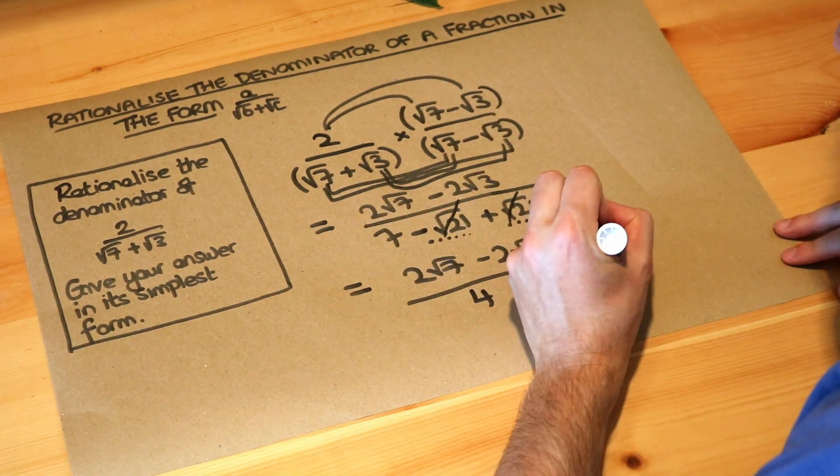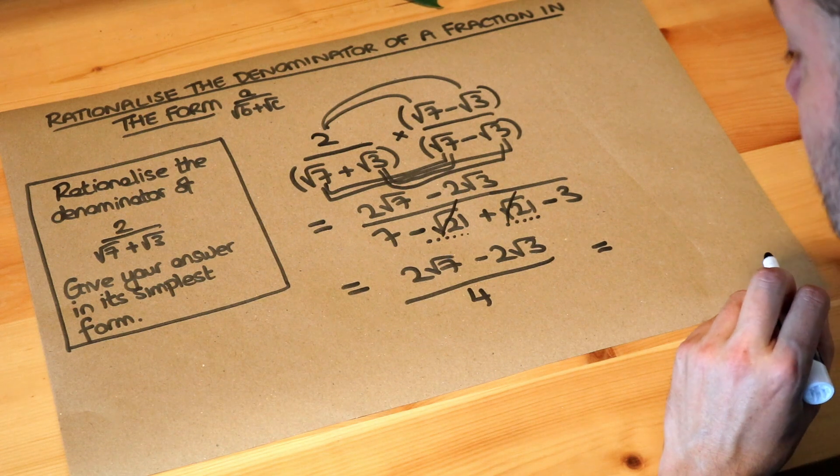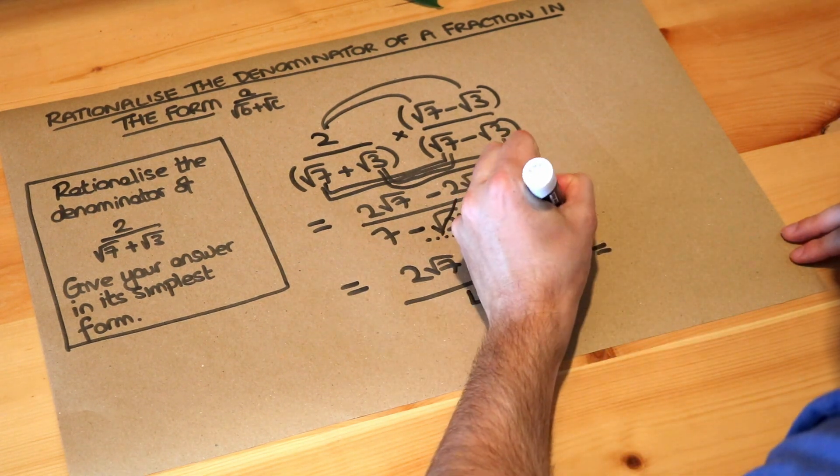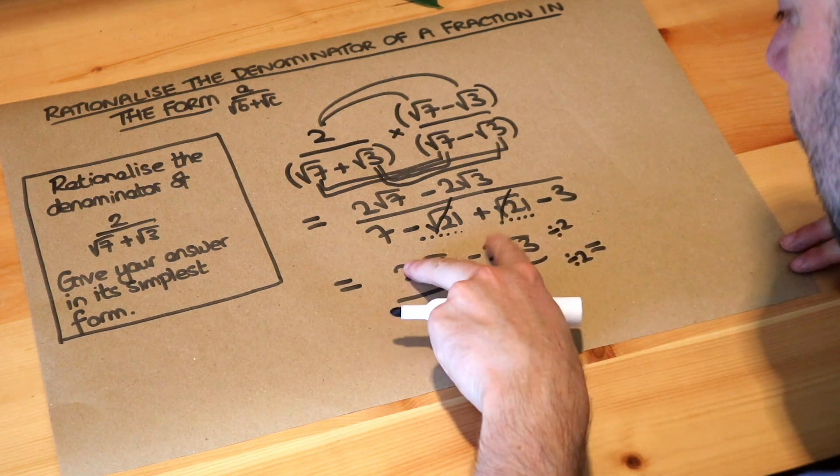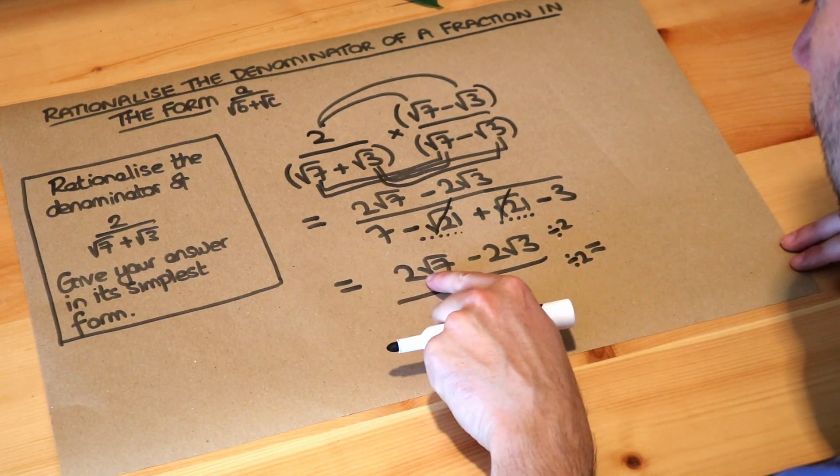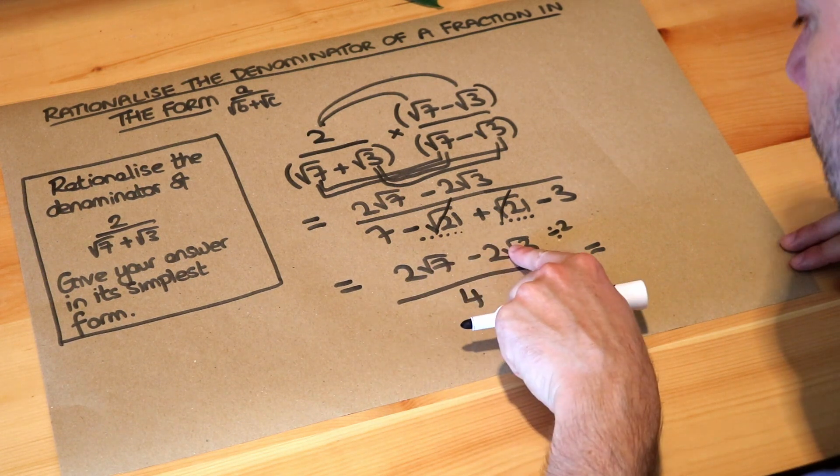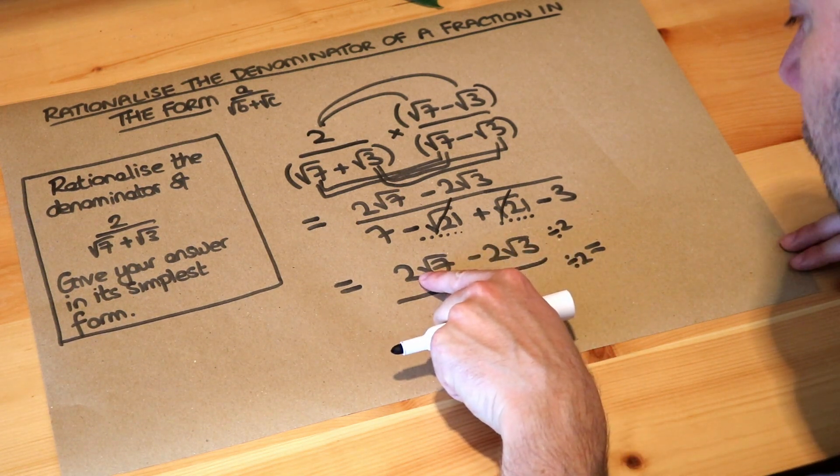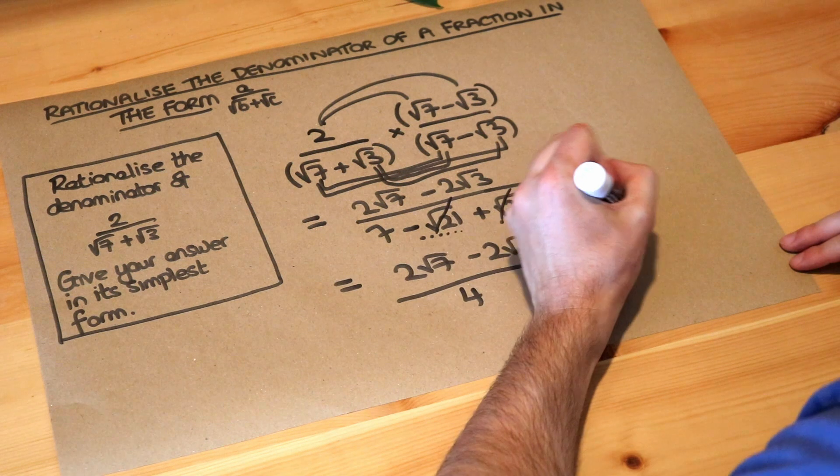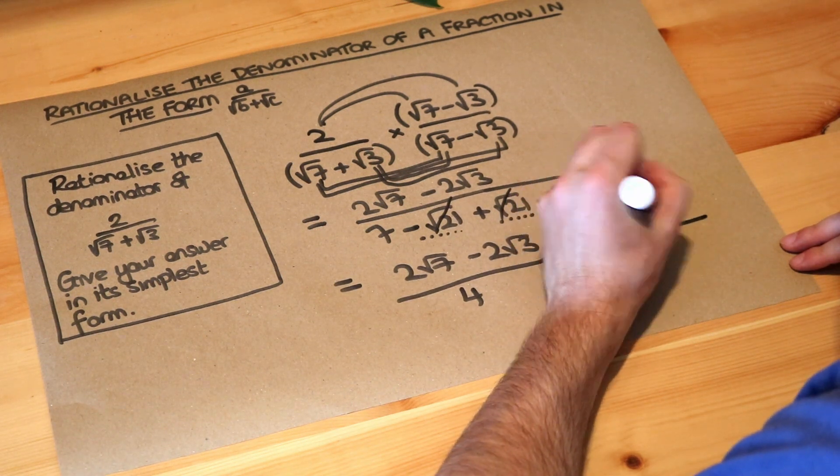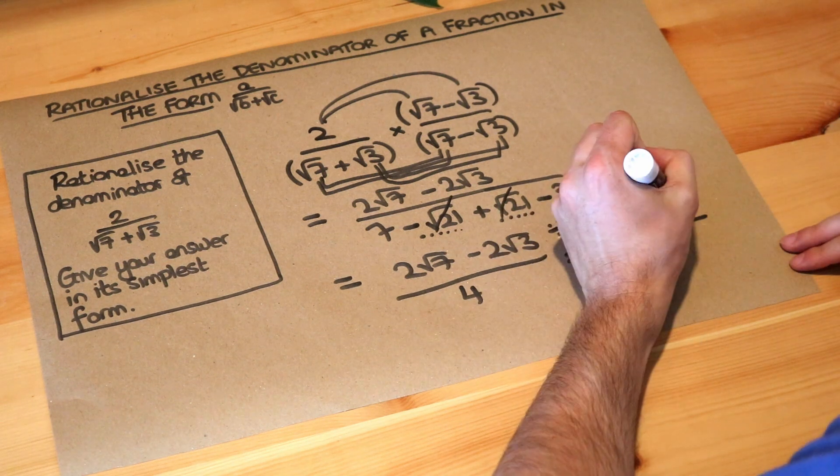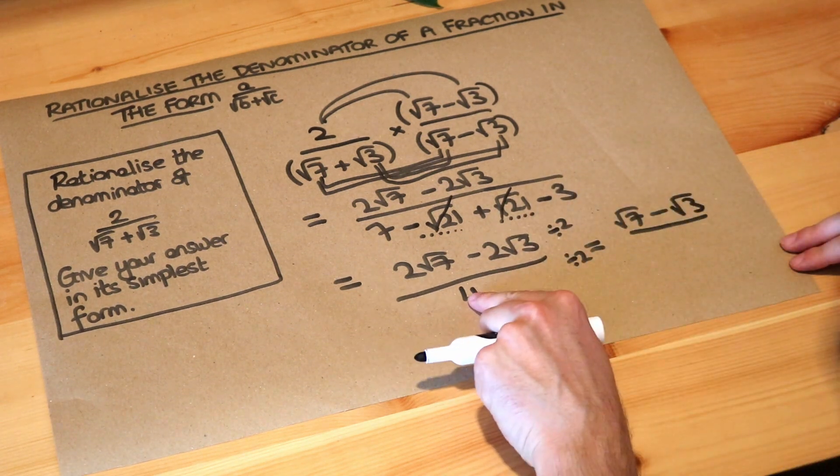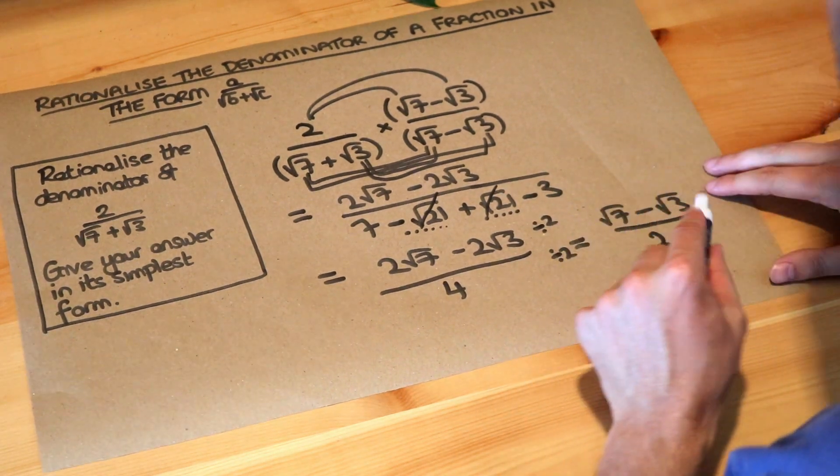Now, we can simplify this fraction further, because can you see we could divide top and bottom of this fraction by 2? Because everything has a factor of 2. Now, if we divide this by 2, we've got to divide that and that by 2. 2 root 7 divided by 2, that just gets rid of the 2 on the front, so it's root 7. And then dividing that by 2, again, just gets rid of the 2, you get minus root 3. And then the 4 divided by 2 is 2. And that is the final answer.